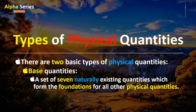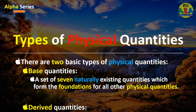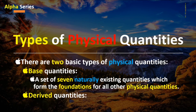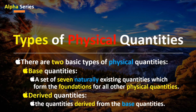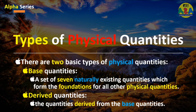There are two basic types of physical quantities. The first one is base quantities — a set of seven naturally existing quantities which form the foundation for all other physical quantities. The second one is derived quantities — quantities which are derived from the base quantities. In the next video, we will discuss each of them in detail.